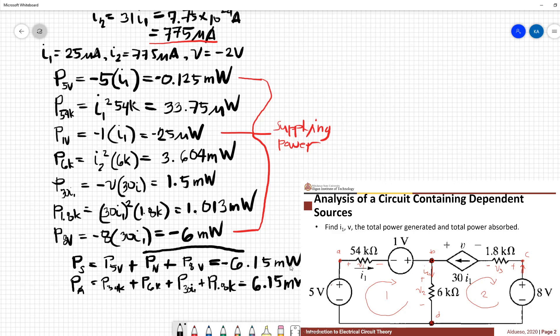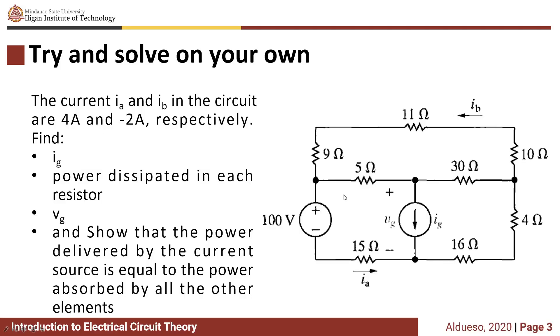In an ideal circuit, or in an ideal scenario, power supplied is equivalent to the power absorbed. Now it's your turn to try and solve a problem. The currents Ia and Ib in the circuit are 4 amperes and negative 2 amperes respectively. So find Ig, the power dissipated in each resistor, Vg, and show that the power delivered by the current source is equal to the power absorbed by all the other elements.